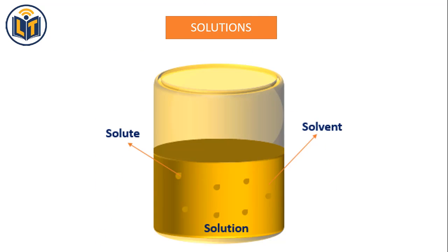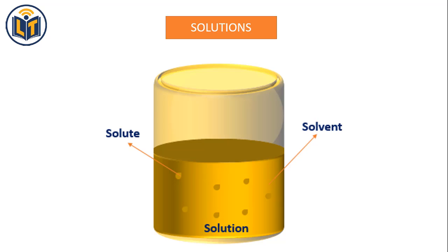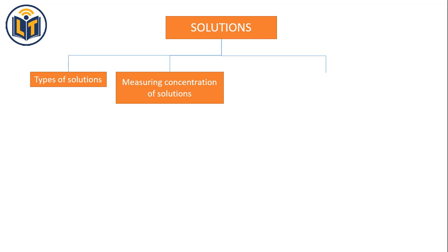A solution is a homogeneous mixture of two or more substances. The component which is present in greater quantity is called solvent and the other component present in lesser quantity is called solute in the solution. In case both components are in equal amount, we identify the solvent by its boiling point in the solution. Under solutions, we will cover types of solution, how to measure the concentration of solutions and solubility of different substances in a solution.